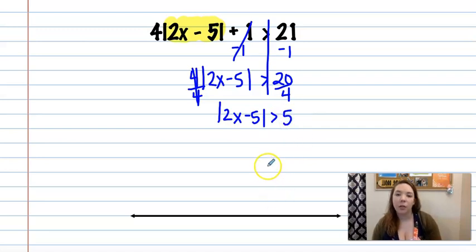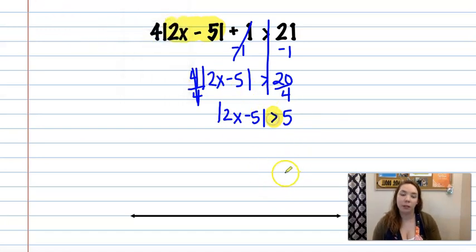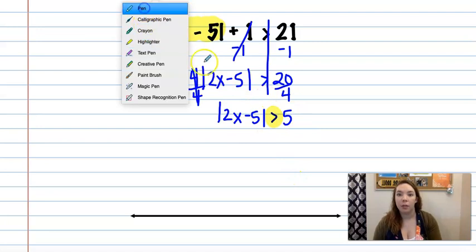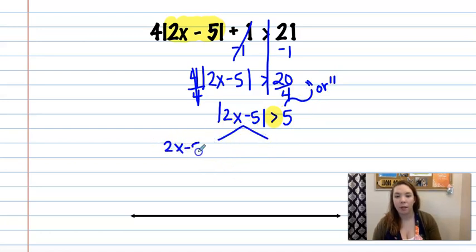Alright, and then greater than problems are or problems. Again, that's going to be one of the first things you identify on these because you don't want to do it wrong the whole rest of the way down. So this is an or problem because it's a greater than. So I'm going to split it into 2, where you have 2x minus 5 is greater than 5, and 2x minus 5 is less than negative 5.